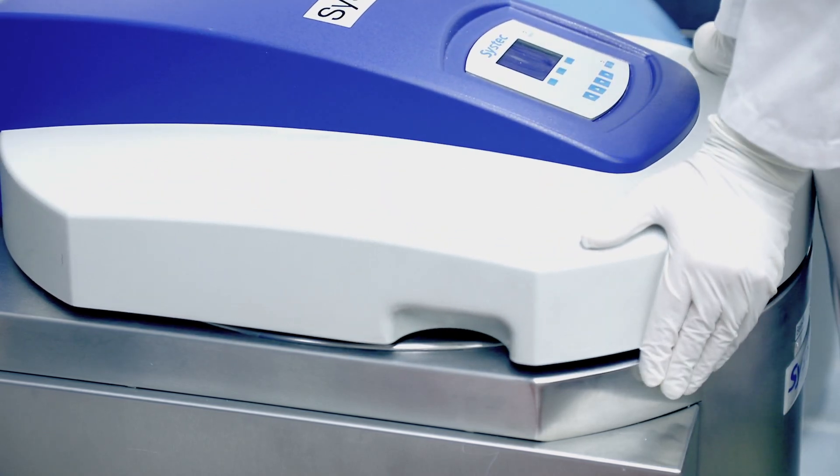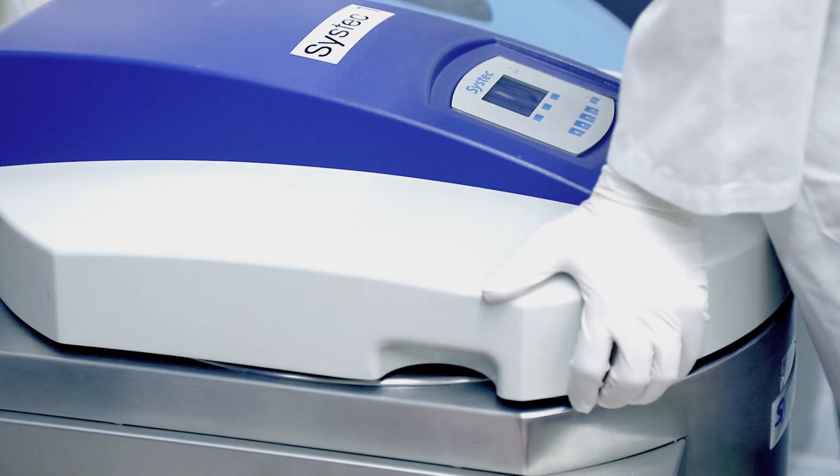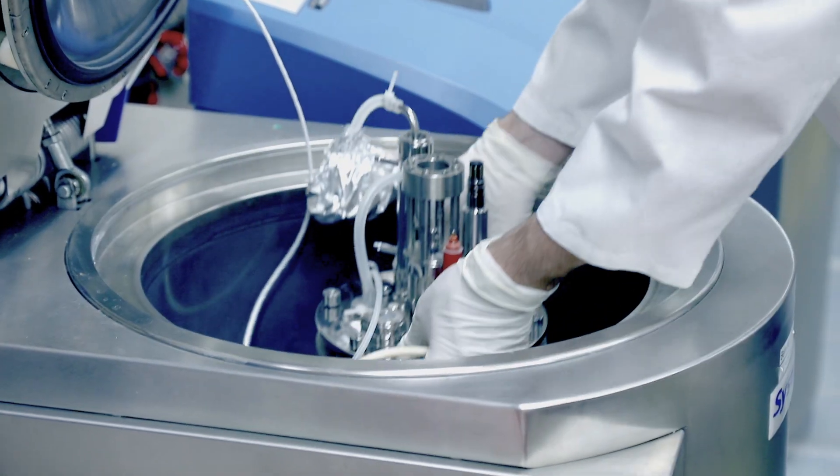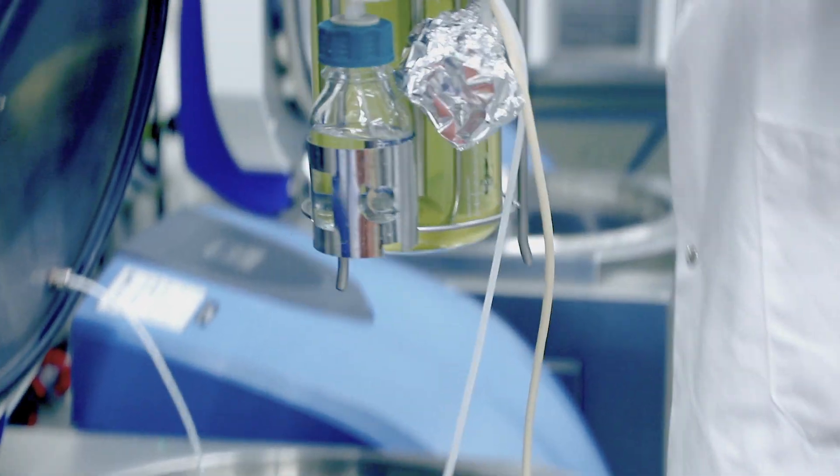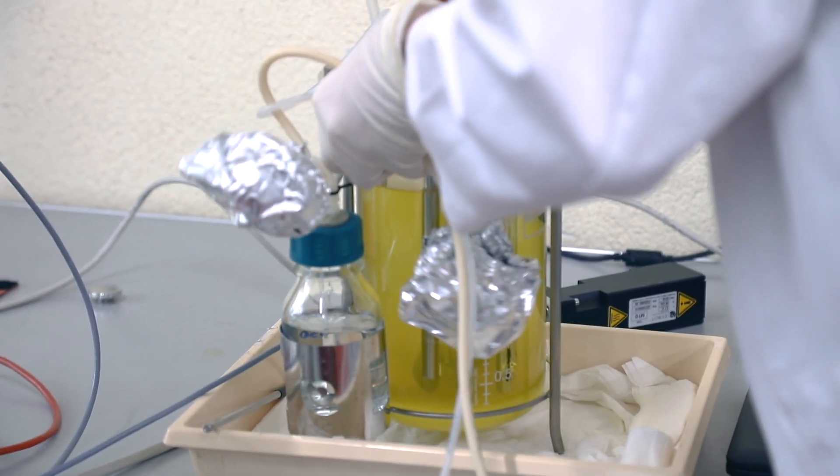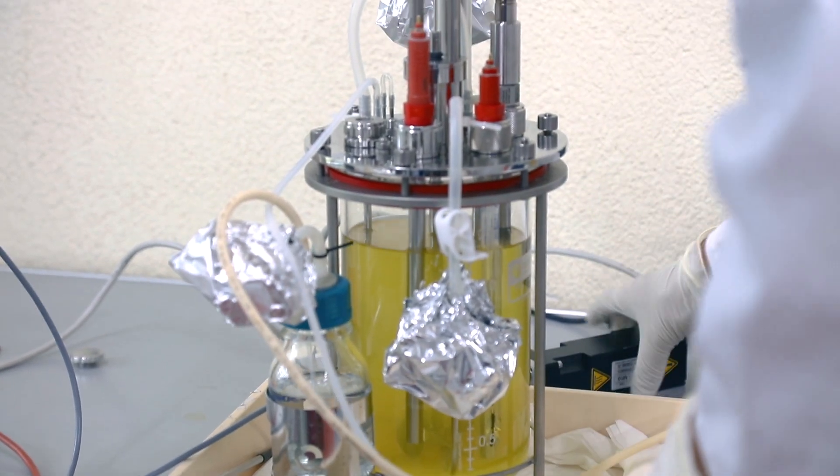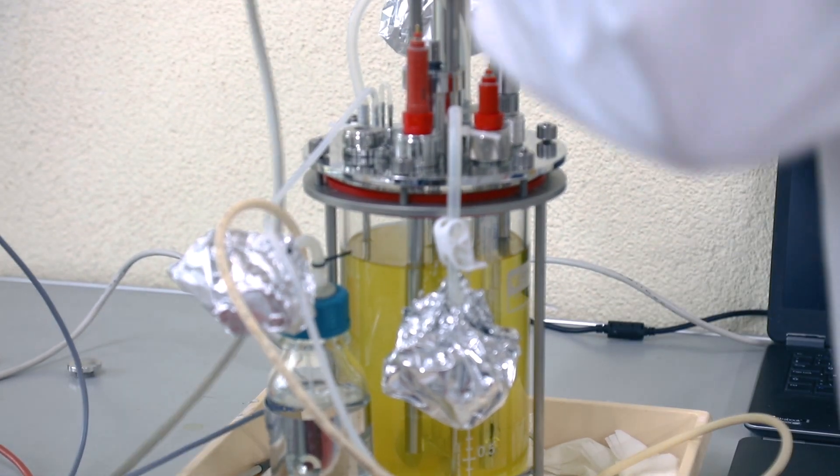The pH probe's slope value will remain stable over several autoclaving cycles, therefore eliminating the need for two-point adjustments. However, the autoclaving process causes an offset in the sensor's pH probe. This can be easily adjusted by performing an in-situ gas calibration.